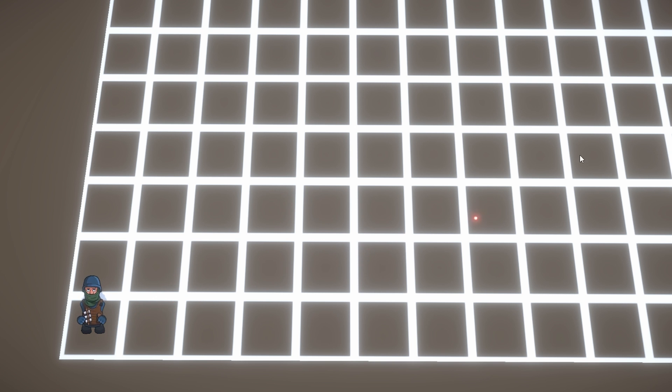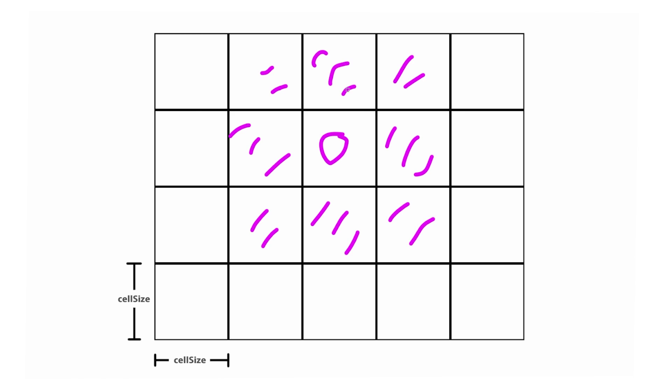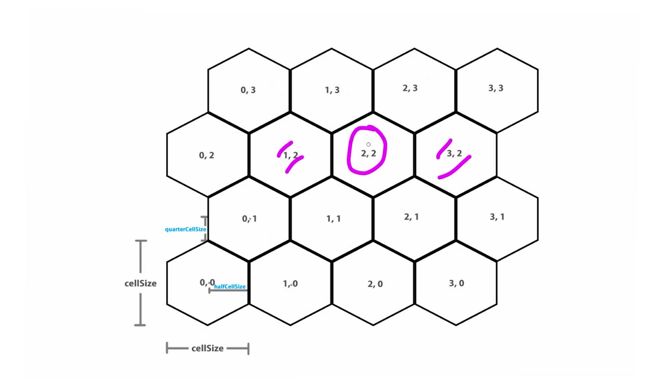If you want the 10 second answer, here it is: you just change the pathfinding grid to use the new hex grid, then you change which neighbors are tested, and that's it — that's all it takes.